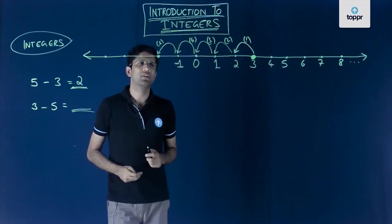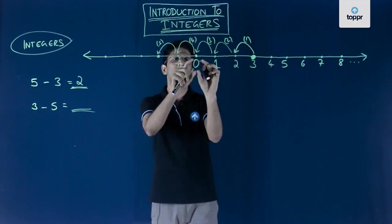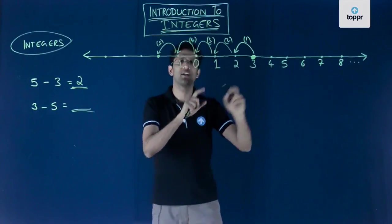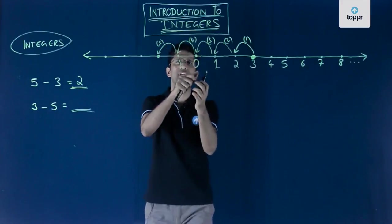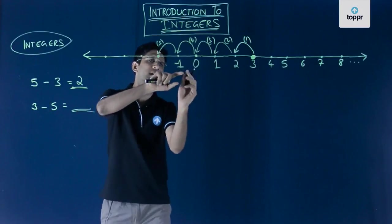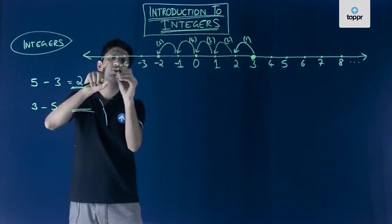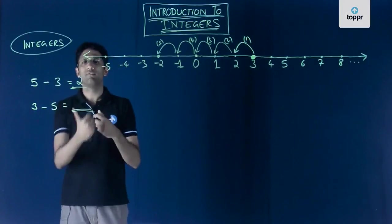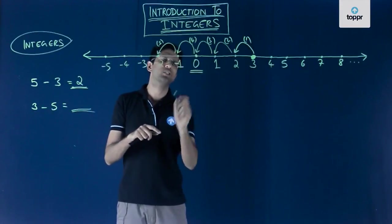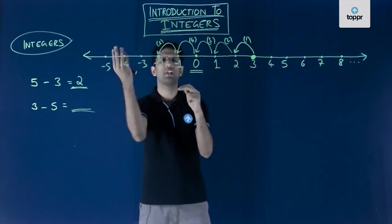So what have we done? We drew a number line, located 0 roughly at the center, and wrote the numbers 1, 2, 3, 4 on the right-hand side of 0 as usual. But now we are also expanding or inventing new numbers on the left-hand side of 0. These numbers are minus 1, followed by minus 2, minus 3, minus 4, minus 5, and so on without ever stopping. If you look at this number line, 0 is the central-most number and the numbers on the right are exactly the mirror image of numbers on the left.